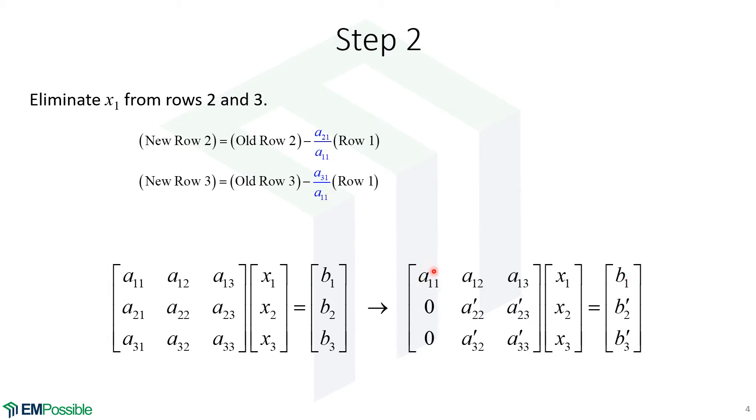That'll put a one in this position. That makes it really easy to figure out what we need to do so that we can subtract this equation from rows two and three so that we get zeros in these positions. And in fact, that's what these constants are doing. So we'll take the old row two. We'll take row one, multiply it by this constant. And when we subtract, we get a zero in that first position. Same thing, new row three is the old row three minus row one times this constant. And that gets a zero in this position.